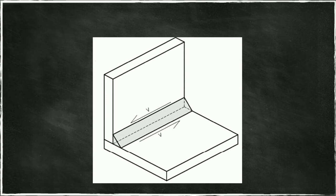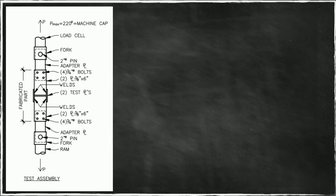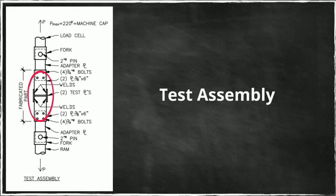We will remember that fillet welds transfer shear. How much shear should we design for? That value comes from structural analysis. The part within this red ellipse is our fabricated assembly. The remaining parts are simply for attachment to the testing machine. And notice we have a load path.